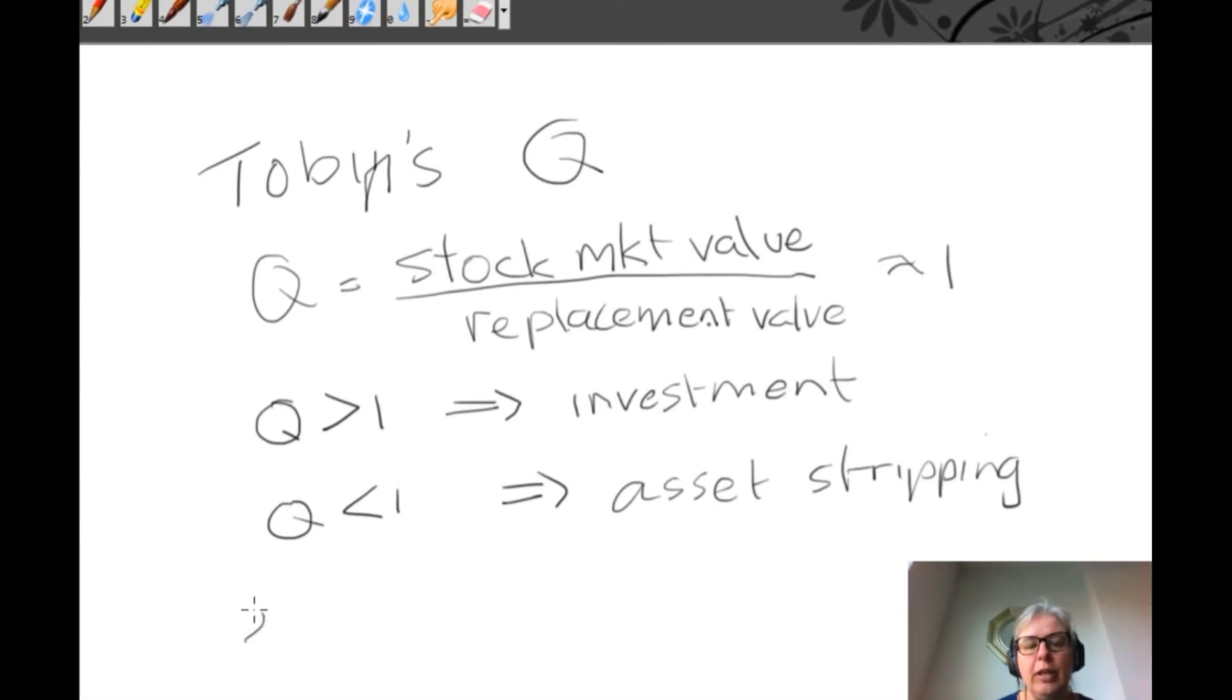So clearly, Tobin's Q is some sort of equilibrium concept. We expect that Q equals one, and ultimately, disturbances away from that will lead us back towards one in some form or the other. So that's the first part of thinking about Tobin's Q as an equilibrium concept as an economist.